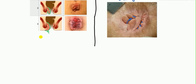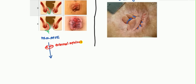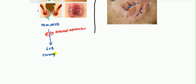External hemorrhoids aren't as severe as internal hemorrhoids because internal hemorrhoids have prolapse, and the prolapse can lead to complications. When you have a prolapse, the external sphincter can compress it, causing decreased venous return and strangulation. Once you have strangulation of the prolapsed piece, this can lead to either fibrosis or gangrene.